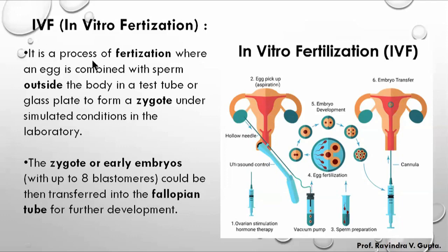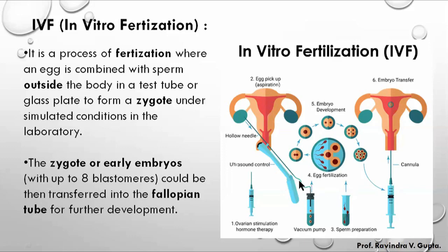IVF is a process of fertilization where an egg is combined with sperm outside the body — in a test tube or glass plate — to form a zygote, under stimulated conditions in a laboratory. Up to 8 blastomeres can be transferred into a fallopian tube or uterus of the female.